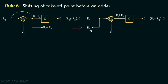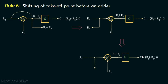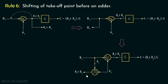Consider this block diagram one more time with the takeoff point before the adder. The output of this adder is r1. In order to make this output r1 plus r2, we need to add r2, and for that we need one more adder at this point. Now we are able to add r2, and hence the output will be r1 plus r2. So if we want to shift the takeoff point before the adder, we need to add one more adder at this point to maintain the output. We are now done with rule number 6.